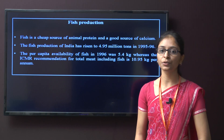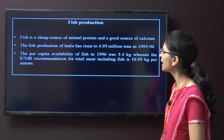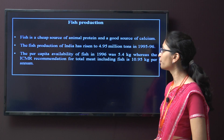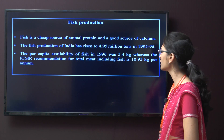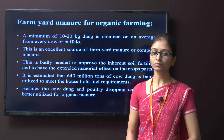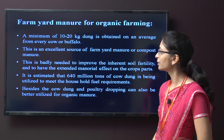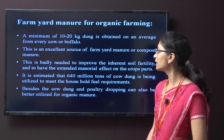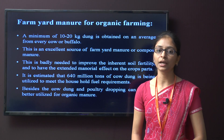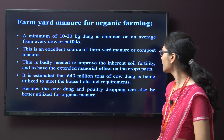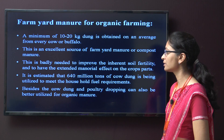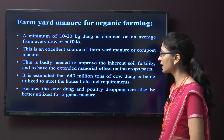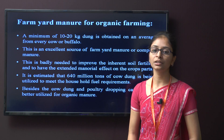Fish is a cheap source of animal protein and a good source of calcium. The fish production of India rose to 4.95 million tons in 1995-96. The per capita availability of fish in 1996 was 5.4 kg, whereas the ICMR recommendation is around 10.95 kg per annum. For farmyard manure and organic farming, a minimum of 10 to 20 kg dung is obtained on average from every cow and buffalo, which is an excellent source of farmyard manure or compost. It is estimated that 640 million tons of cow dung is utilized to meet household fuel requirements, and poultry droppings can also be utilized for organic manure.